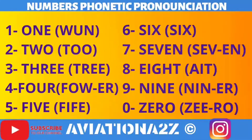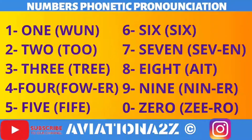ICAO also gave pronunciation to numbers as: one, two, three, four, five, six, seven, eight, niner, zero.